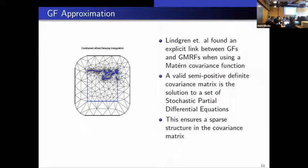Lindgren et al. found an explicit link between Gaussian fields and Gaussian Markov random fields when using a Matérn covariance function. So a valid positive semi-definite covariance matrix is the solution to a set of stochastic partial differential equations, which ensures a sparse structure in the covariance matrix. So that mesh there, they solve the stochastic partial differential equations using the finite element method. And that involves doing a triangulation on your area of interest and then deriving the finite element method from your triangulation.